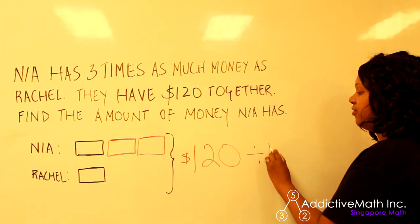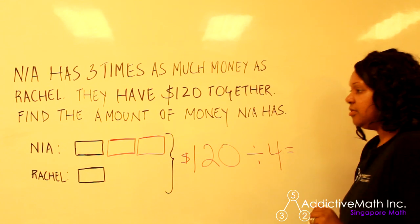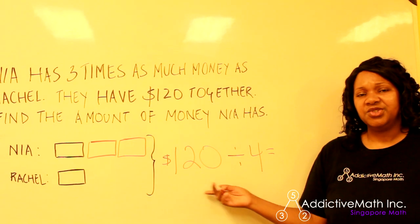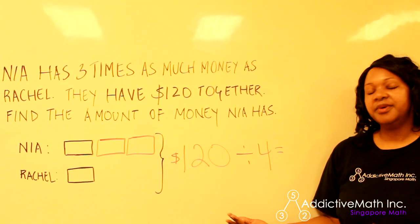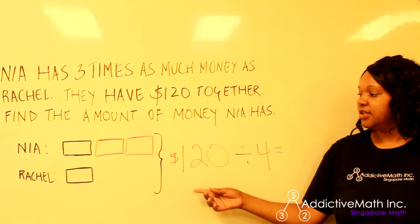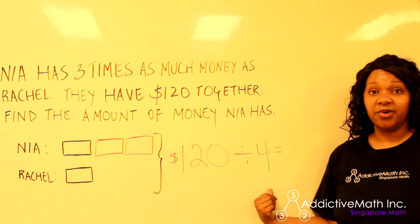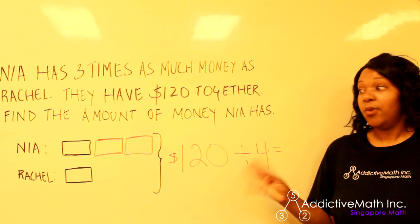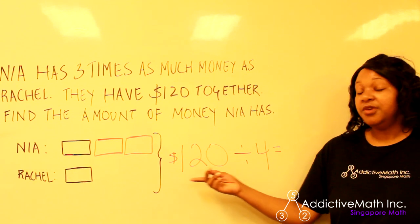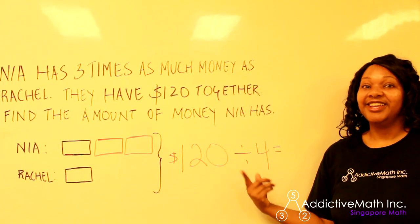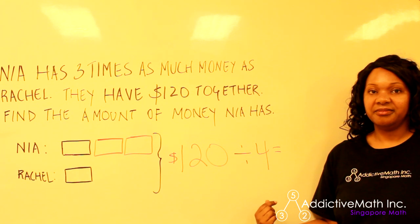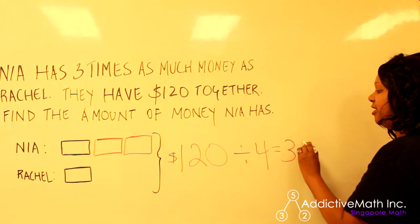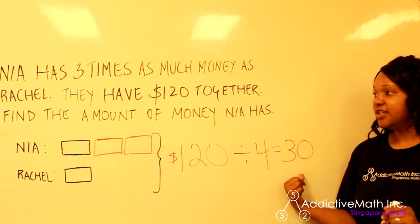For some of our younger viewers, if you say 'oh, 120 divided by four — I don't know what that is,' let's take a look. Do you know what 12 divided by four is? My daughter, if I said 'Nia, what's 12 divided by four?' she'd say 'oh, that's three!' So if you know 12 divided by four, you know 120 divided by four — you just add a zero to the three. So 120 divided by four is 30.